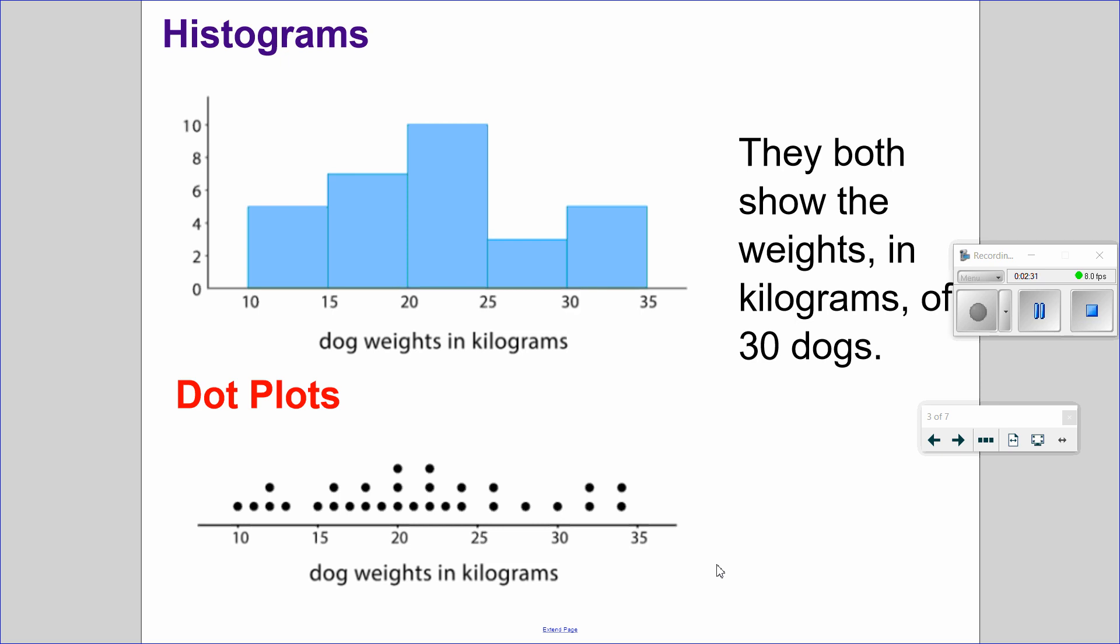They both show the weights in kilograms of 30 dogs. So this is a histogram and this is a dot plot. They are both showing the exact same thing. They're both about the weights in kilograms of 30 dogs.